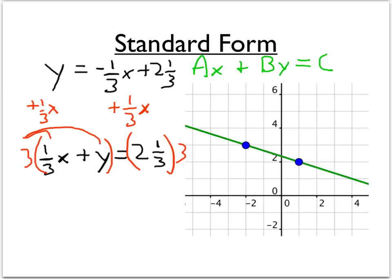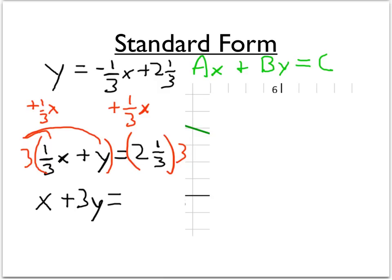We'll distribute the 3. So 3 times a third is just 1, so we're left with x. 3 times y is 3y. And that equals 2 and 1 third times 3. So 2 and 1 third times 3. 2 and 1 third is the same as 7 thirds. And 7 thirds times 3 is 21 thirds. And 21 is divisible by 3, which equals 7. So that tells me that this side of the equation, 2 and 1 third times 3 is 7. And there we go. Standard form of that line.